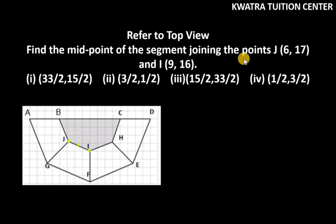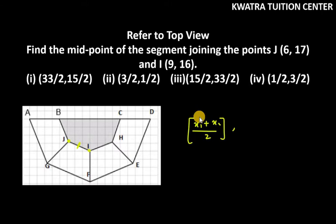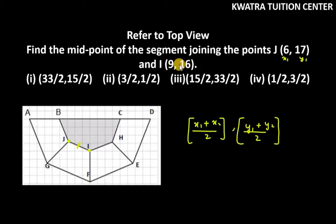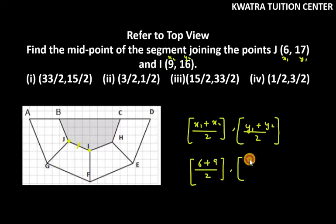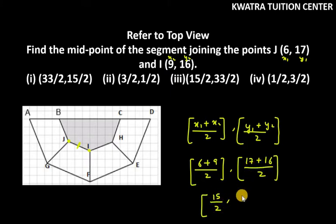The first part says: find the midpoint of the segment joining the points J and I. The midpoint formula is: x1 plus x2 divided by 2, and y1 plus y2 divided by 2. So you get 6 plus 9, that is 15, divided by 2, and 17 plus 16 is 33 divided by 2. So the right option is the 3rd part.